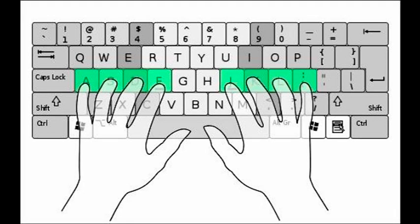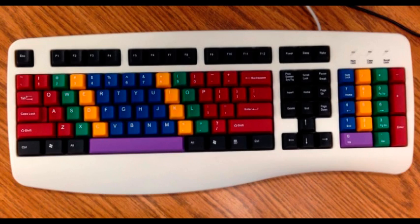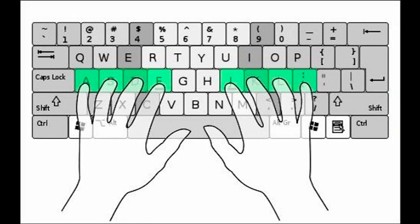Now let's type in the green keys. Start with the right fourth finger: press L, O, 9, O, L, period, L. Space bar with your right thumb. Continue with the left fourth finger: type S, W, 2, W, S, X, S, and space bar with the right thumb. Press the enter key with the right pinky finger. You should have the following two rows typed.